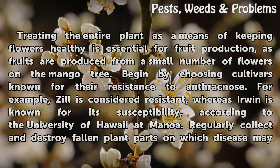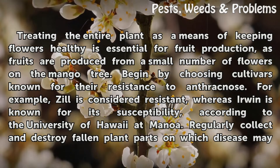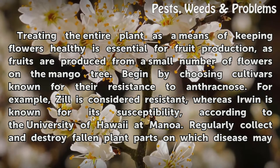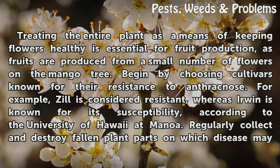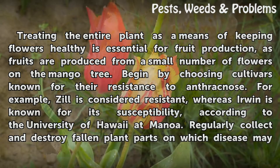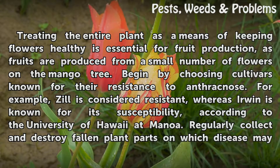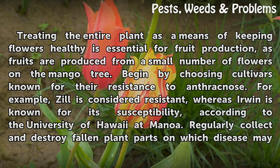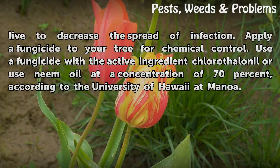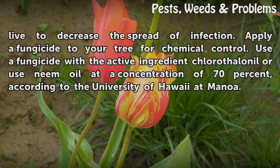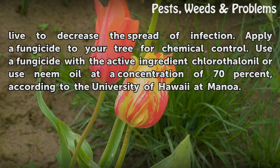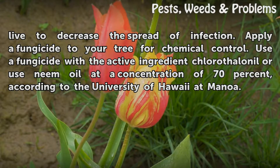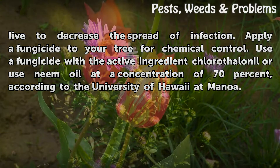Treating the entire plant to keep flowers healthy is essential for fruit production, as fruits are produced from a small number of flowers on the mango tree. Begin by choosing cultivars known for their resistance to anthracnose; for example, Zill is considered resistant whereas Irwin is known for its susceptibility, according to the University of Hawaii at Manoa. Regularly collect and destroy fallen plant parts on which disease may live to decrease the spread of infection. Apply a fungicide for chemical control, using one with the active ingredient chlorothalonil or neem oil at a concentration of 70 percent, according to the University of Hawaii at Manoa.